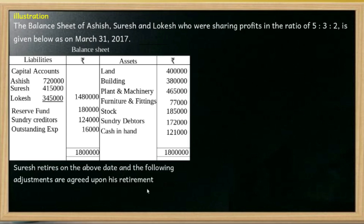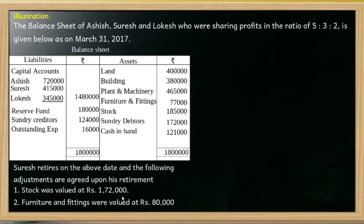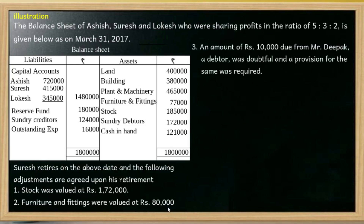Suresh retires on the above date and the following adjustments are agreed upon his retirement. The second partner, Suresh, retires. The terms and conditions include: stock was revalued at Rs. 1,72,000. Furniture and fittings book value is Rs. 77,000.